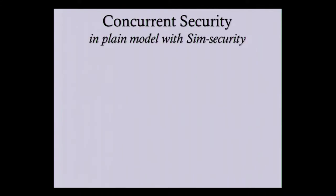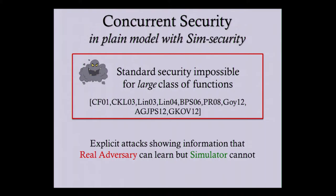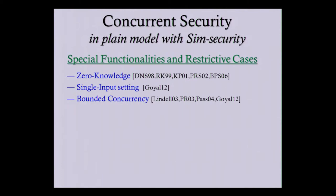So what do we know about this model? There is a long list of impossibility results which rule out a large class of functionalities in this concurrent setting. These results are very strong and show explicit attacks which an adversary can launch in the real world that are impossible to simulate in the ideal world. On the positive side, we only know results for very special functionalities such as zero knowledge and the single input setting, or for restrictive classes such as bounded concurrency.